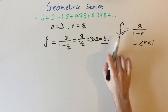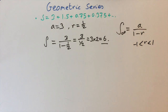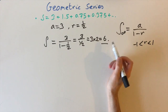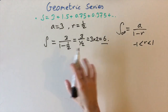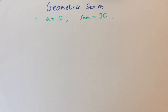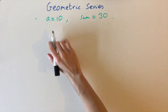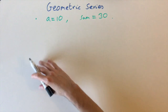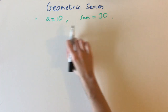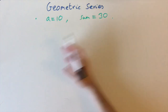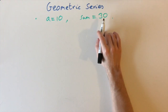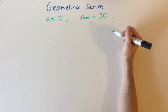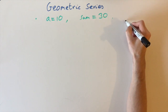This is a very beautiful formula, and it's good to know how to use it. Now let's look at a slightly harder problem. We're told two bits of information: the first term of some geometric sequence is equal to 10, and the sum of all its terms is equal to 30. The question is to find the common ratio r.